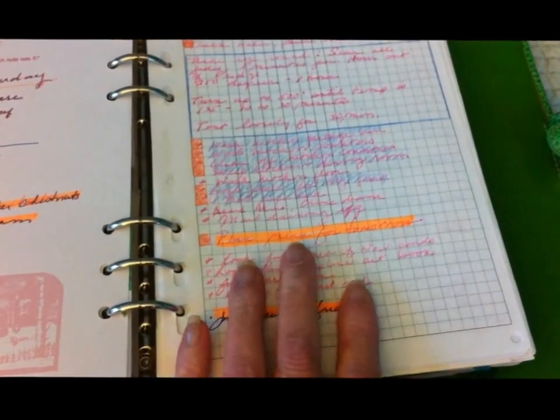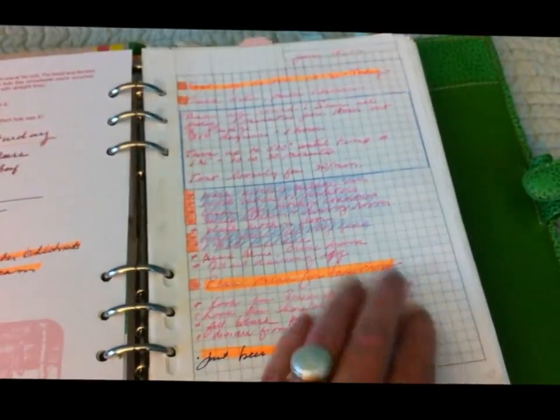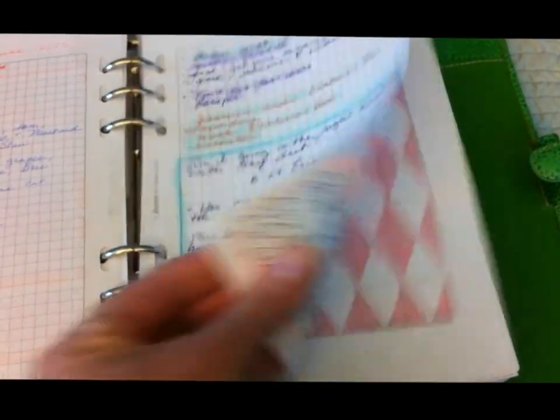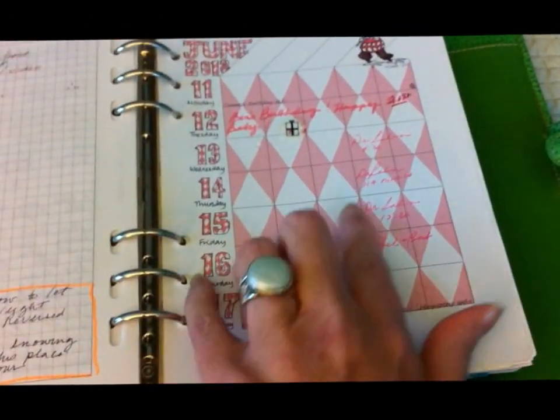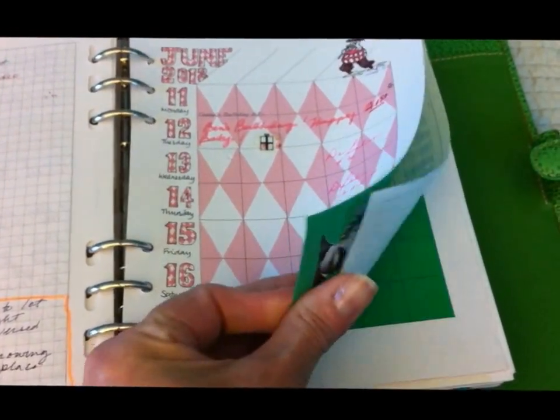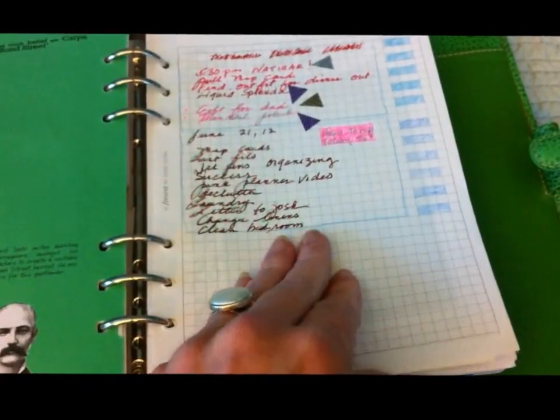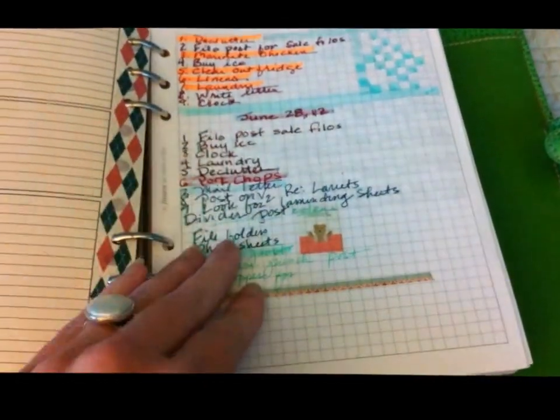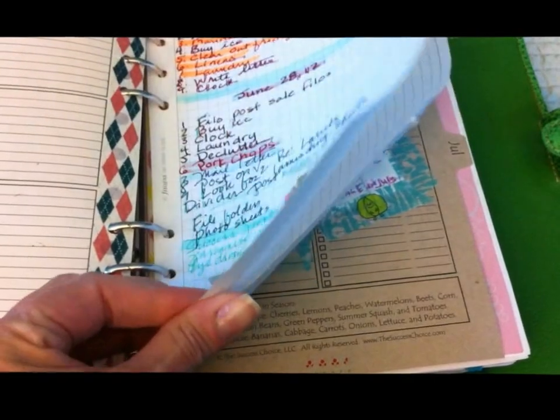I do all my daily to-do stuff on graph paper and that's been perfect. And then I'll write little things, weekly things, if there's an appointment on the Dodo sheets. I know this is a little too colorful for some people.